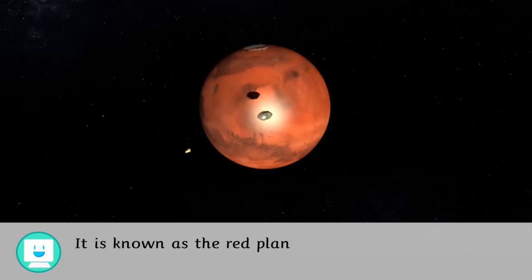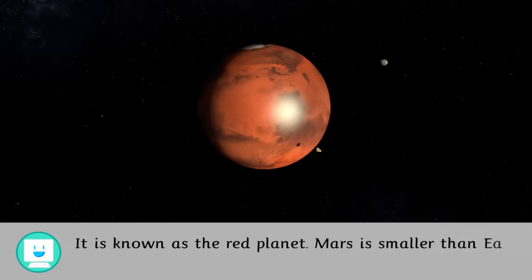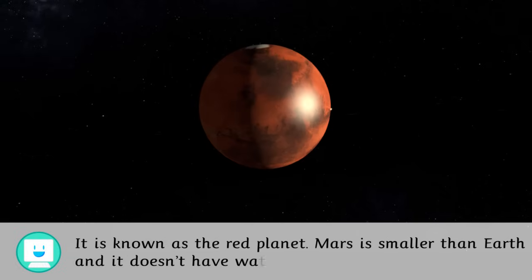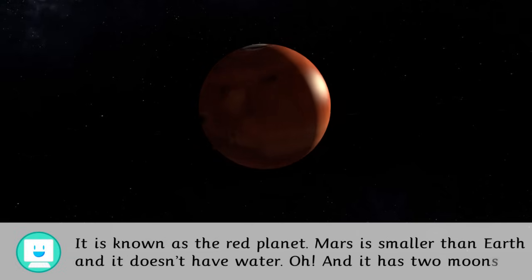It is known as the red planet. Mars is smaller than Earth and it doesn't have water. Oh, and it has two moons.